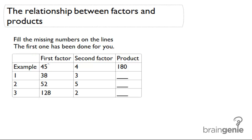So we have the first factor which is 45, the second factor which is 4 and the product that's 180. So what this means is 45 which is the first factor times the second factor 4 is going to give us a certain product of 180.